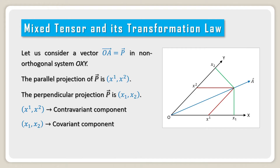Here x upper suffix 1 and x upper suffix 2 are the contravariant components, and x lower suffix 1 and x lower suffix 2 are the covariant components.